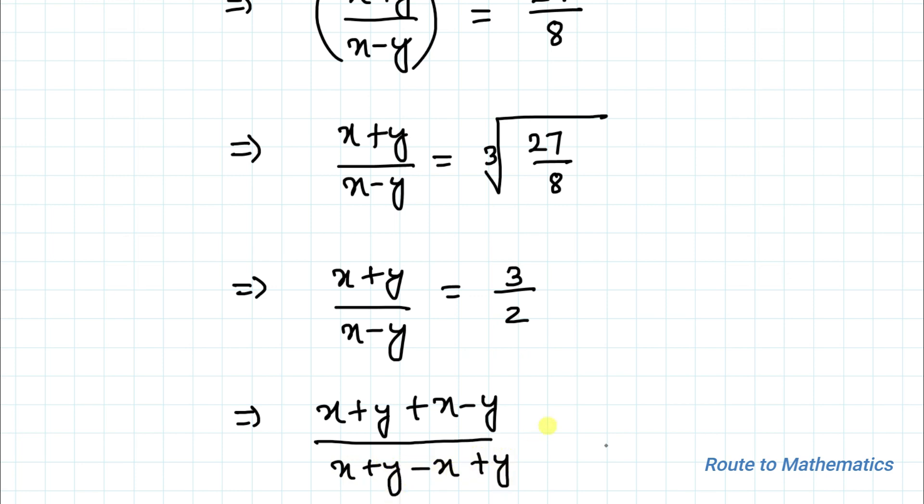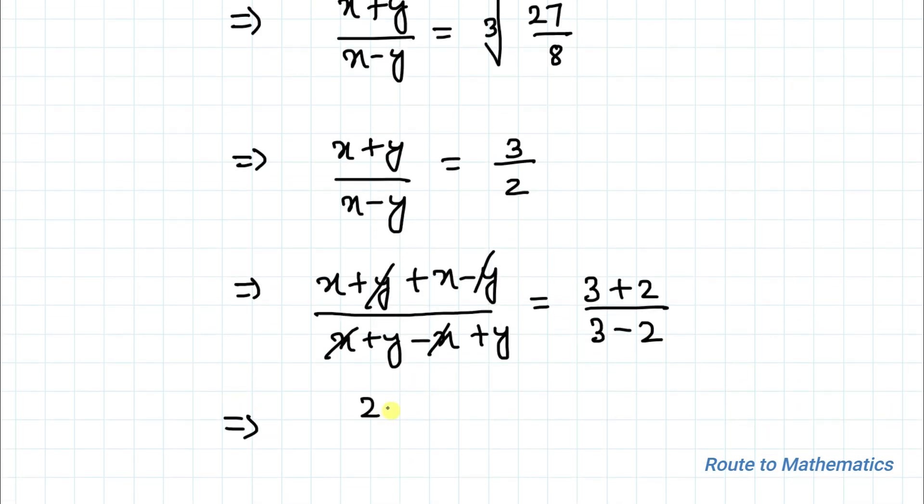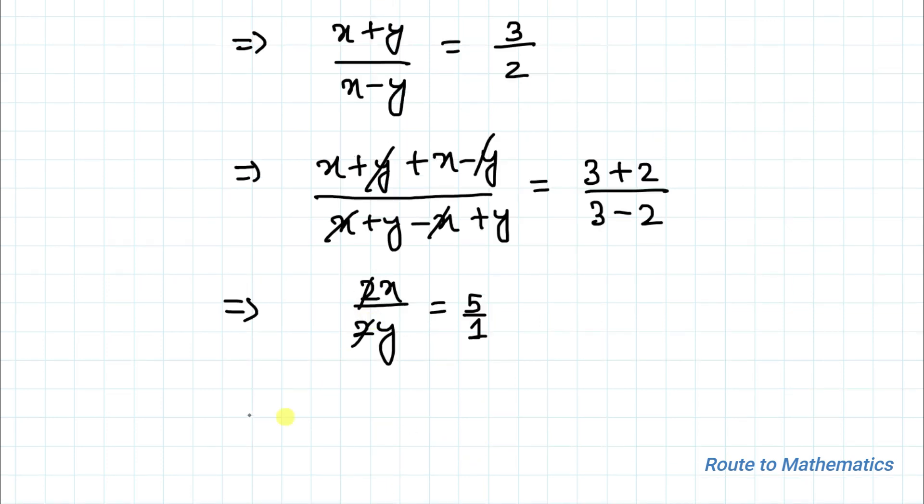That is (x+y+x-y)/(x+y-x+y) equals (3+2)/(3-2). So here we have +y-y, this gets cancelled out, and here we have x and -x, this also gets cancelled out. So we have 2x/2y equals 5/1.